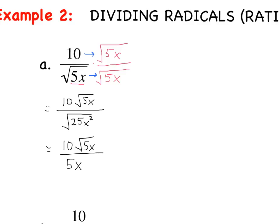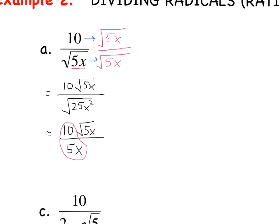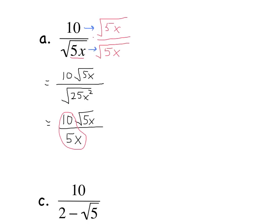Now we see if we can simplify further. 10 divided by 5 simplifies, since they share a factor of 5. So our final answer is 2 times the square root of 5x all over x, because 10 divided by 5 is 2.